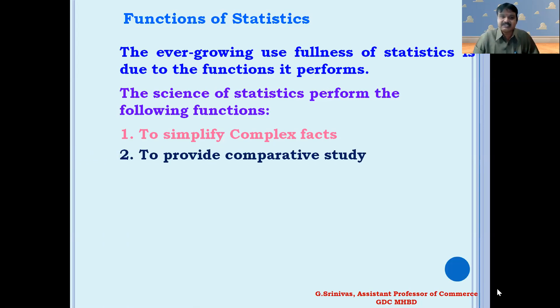The second function is to provide comparative study. The science of statistics does not merely mean counting but also comparison. One statistician states that the object of statistics is to enable comparison to be made between past and present results, with a view to ascertaining the reasons for changes which have taken place. Statistical measures like averages, ratios, percentages, rates, and coefficients offer the best way of comparison between two or more phenomena.